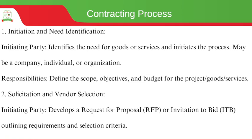The contracting process begins with initiation and need identification. The first step involves identifying the needs for goods or services and initiating the process. We need to begin by identifying that we definitely need item X or a particular good — this is critical even at an individual level when purchasing any goods.